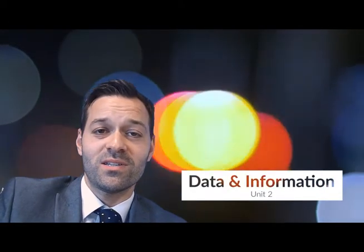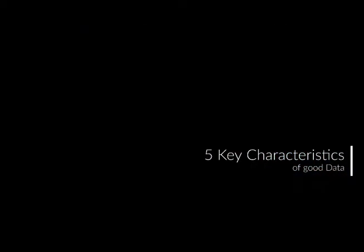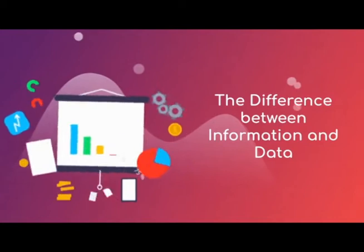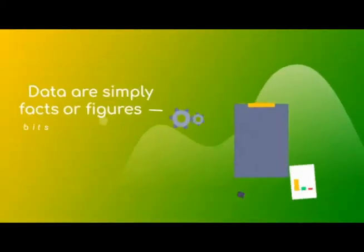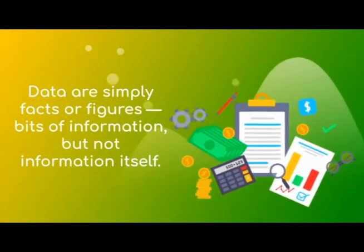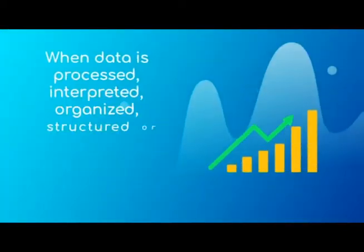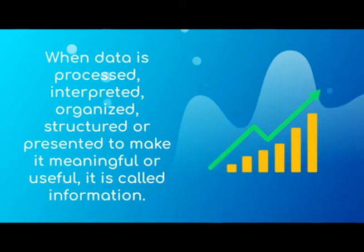Welcome to this video on data and information. Today we're going to look at what data is, what information is, and the differences between the two, as well as the five key characteristics of good data. Data is simply a collection of facts and figures — little bits of information, but not information itself. When data is processed, organized, and put into some sort of order, it gives it meaning, and this is what we call information.